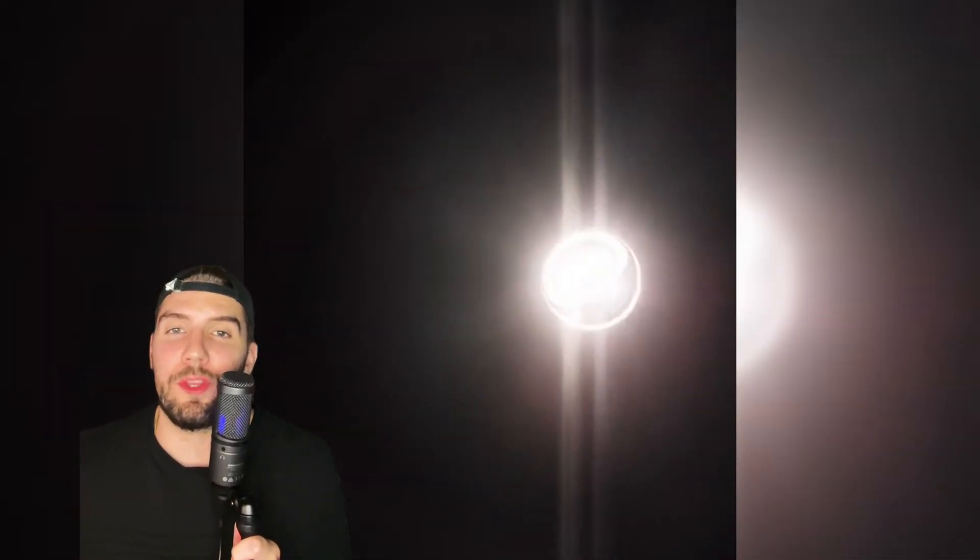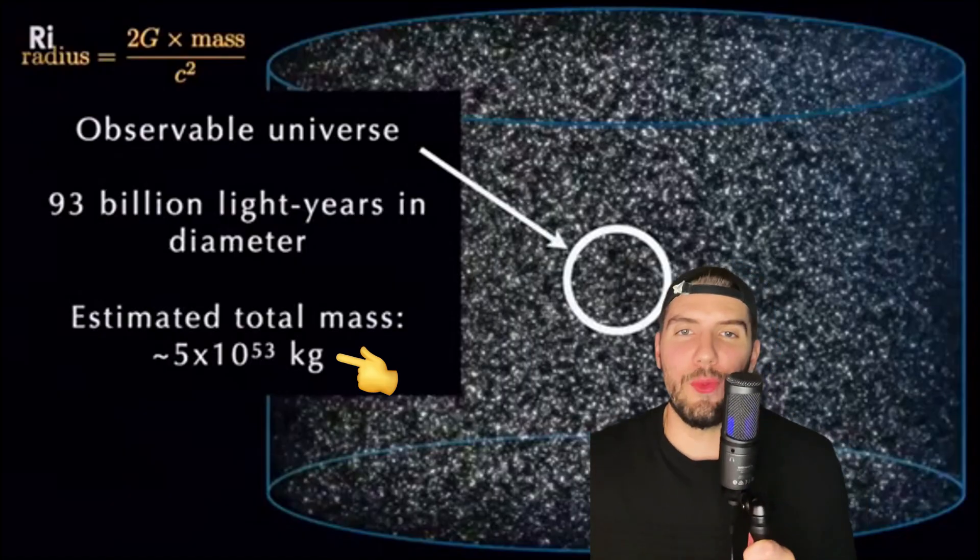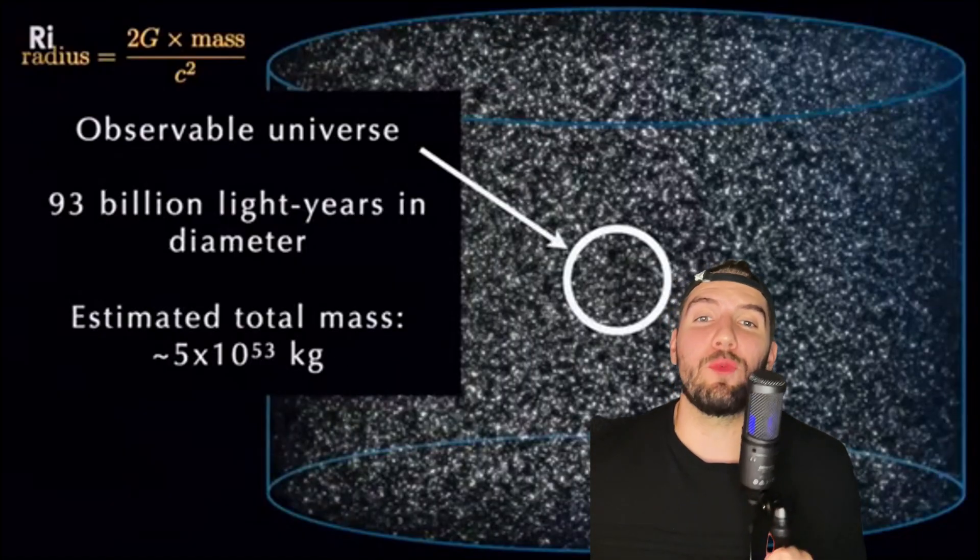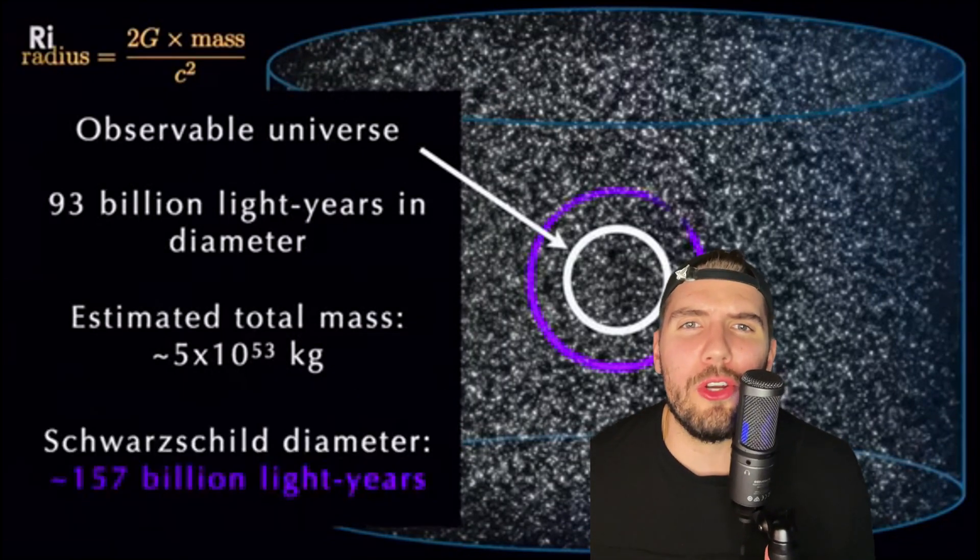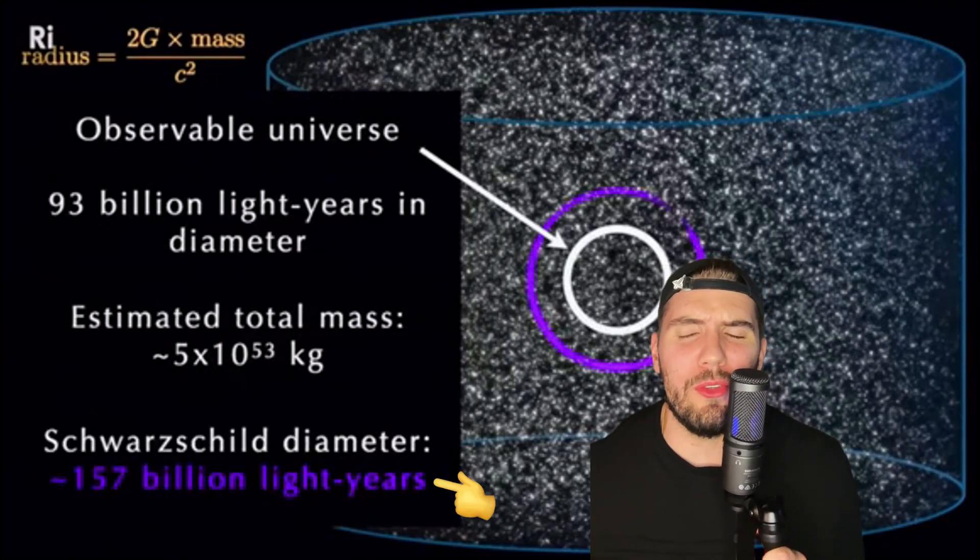Okay, maybe our universe's mass estimate was wrong. Let's take that mass and half it in order to factor out all uncertainties within our mass estimate. That should take care of it. So then, if we wanted to make a black hole out of this revised mass of the observable universe, we'd need to pack it into a sphere that's about 50% larger than our observable universe?